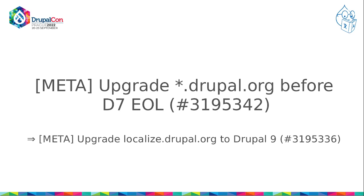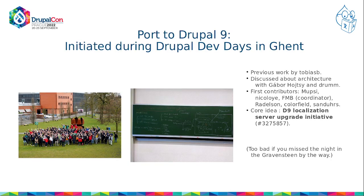The current instance of localize.drupal.org is Drupal 7 and we are here to change things. Here are the two meta issues: one for the upgrade of all the Drupal.org websites, and the meta issue for the localized instance specifically. The initiative first started at Drupal Dev Days in Ghent, where we based our work on a previous issue from Tobias B. A team of contributors gathered around Gabor and Drem — including Mepsi, Philippe, Radelson, Colorfield and Stefan — and we all agreed to create this community initiative: D9 Localization Server Upgrade, to port the current instance of localize.